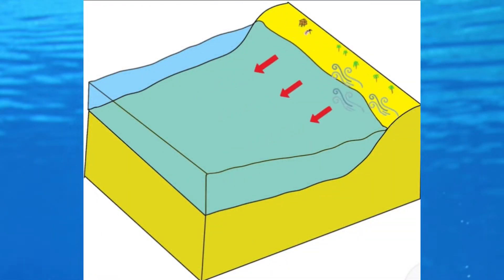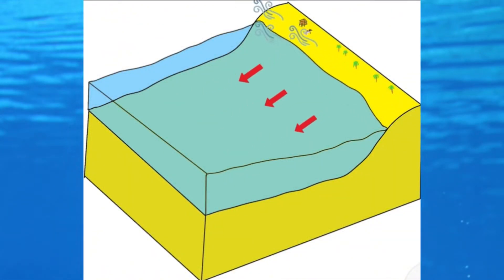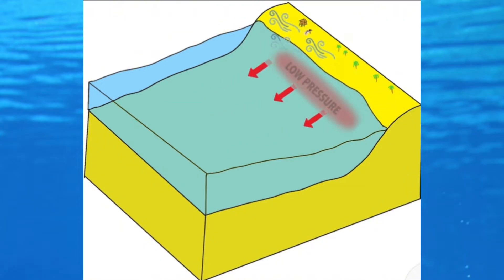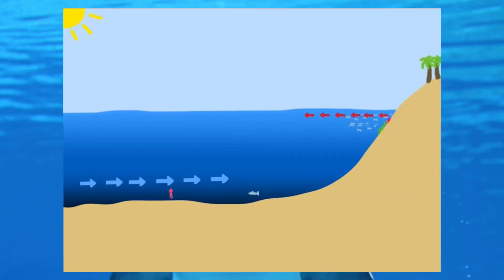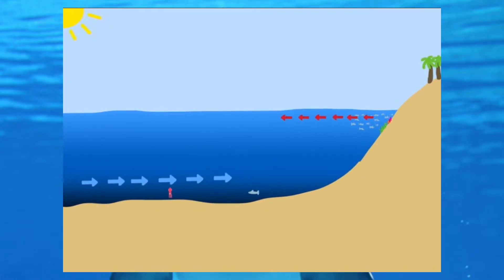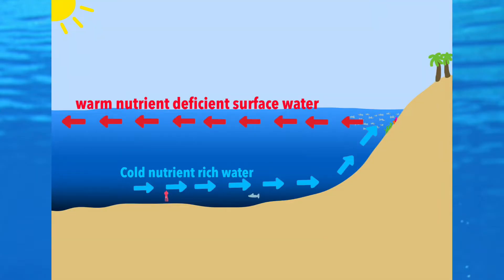Coastal upwelling is a process by which wind moving parallel to the shore or offshore pushes warm, low-nutrient surface water out to sea. That creates a low pressure area near the coast, which then forces nutrient-rich cold water to rise up from the deep to the coast.